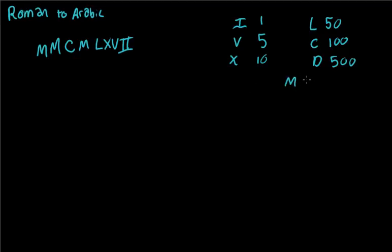Okay, so let's look at the number that we have. So we are starting out with two M's, and M is 1000, so two M's would be 2000.